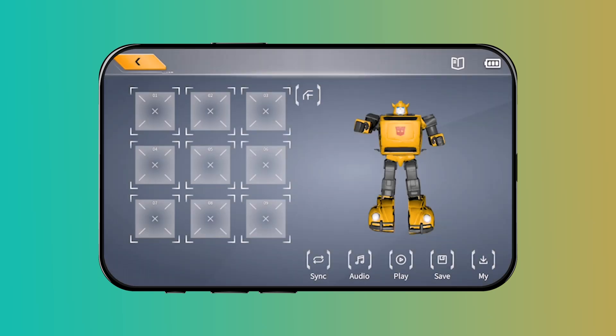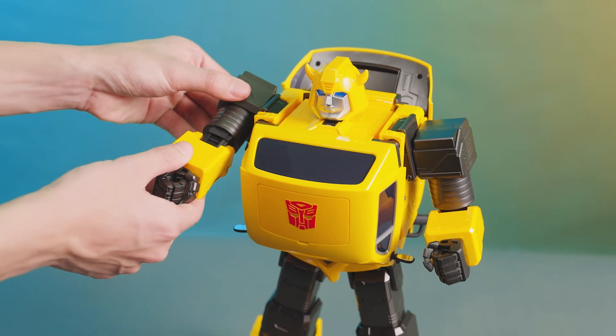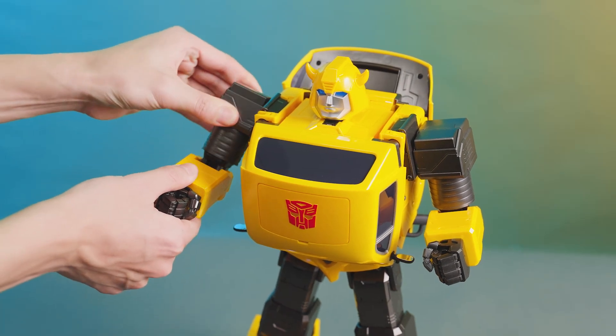Then click the first grid to record it. Continue to edit the next action by rotating both arms.